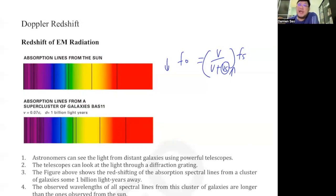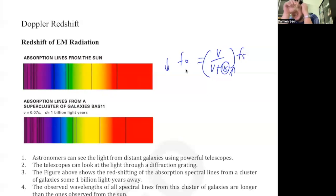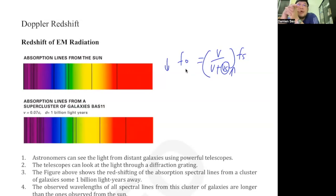In AS they give you a Doppler formula which also appears in the new syllabus data sheet. However, this formula is not really used for light from stars, because it's only applicable for small objects moving at relatively low speeds. For bigger objects like stars moving away from us, their speeds are much larger, so we don't usually use the AS Doppler formula for stars.